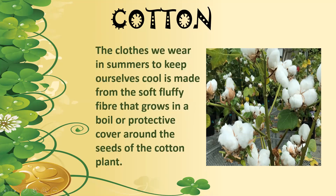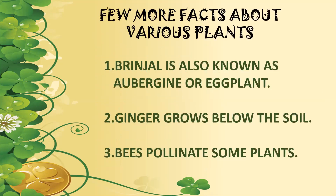A few more facts about various plants: brinjal is also known by two other names — first is eggplant, a very common name, and second is aubergine. Even ginger is an edible root — since it is a root, it grows under the ground below the soil. Bees pollinate some plants — as we discussed at the start, bees and insects sit inside flowers, stick to parts of the plant, and then transport pollen when they fly away.